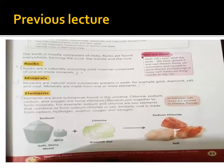In the previous lecture, we told you what rocks are. Rocks are naturally occurring solid material composed of one or more minerals. Then we talked about minerals. Minerals are natural solid substances present in Earth. For example, gold, diamonds, salt and coal.